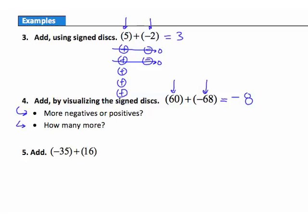Example 5: add negative 35 plus positive 16. Do I have more negatives or more positives? More negatives. How many more? 35 minus 16 — I borrow from the 3, making it a 2, and the 5 becomes 15. 15 minus 6 is 9, and 2 minus 1 is 1, giving 19 more negatives. So the answer is negative 19.